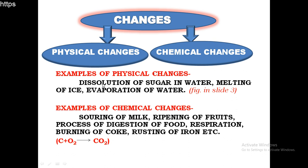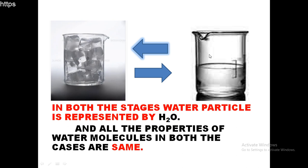Let's take the example of melting of ice. This is the representation of the process - before the melting and after the melting of ice. In both cases, before and after melting, the constituent particle of water is the same; it is represented by H2O. Since in both cases it is represented by H2O, that means no new substance is formed, and this state will show similar properties to that of the initial state.